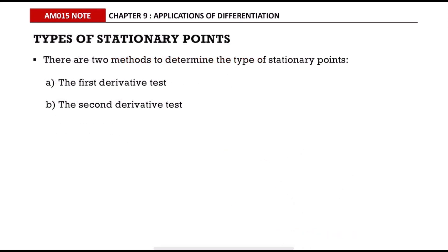There are two methods to determine the type of stationary points: the first derivative test and the second derivative test.